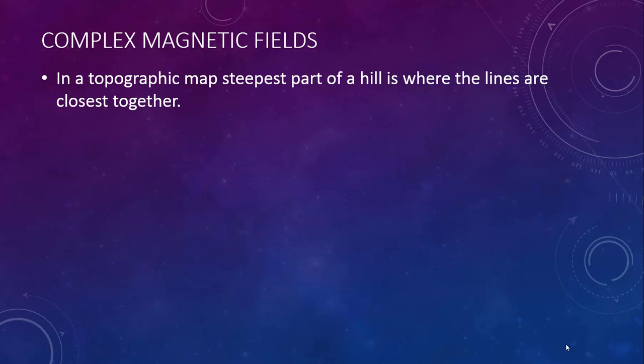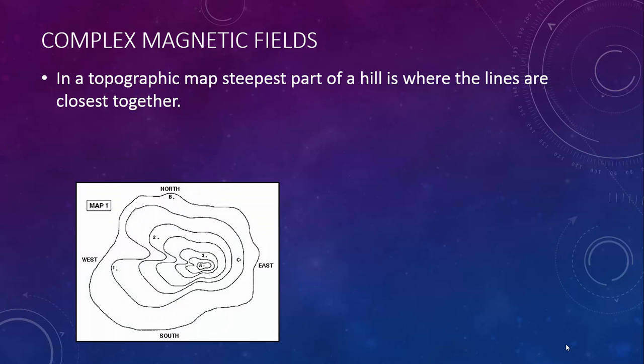Think back to earth science. You learned about topographic maps. In a topographic map, the steepest part of a hill is where the lines are closest together. In this example, it would be the south side of the hill.